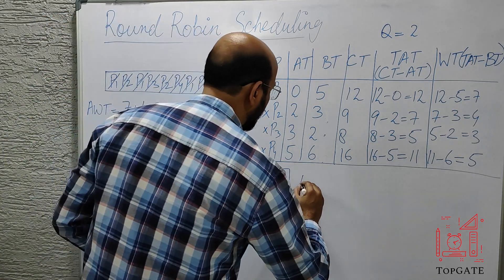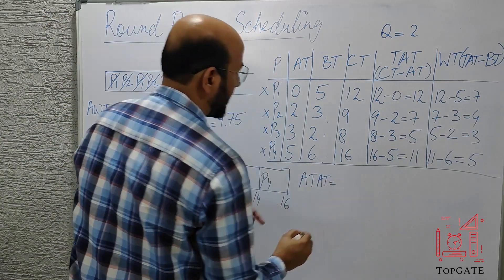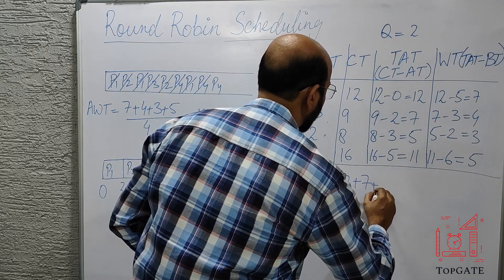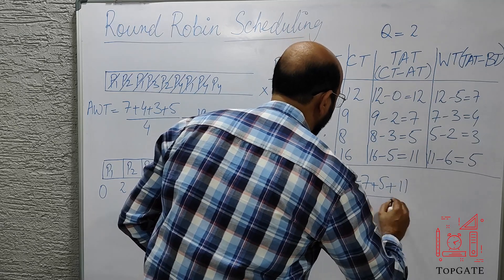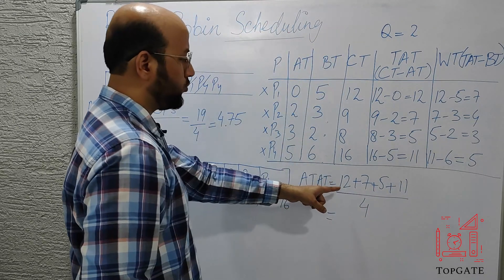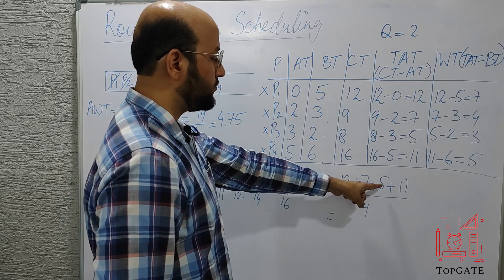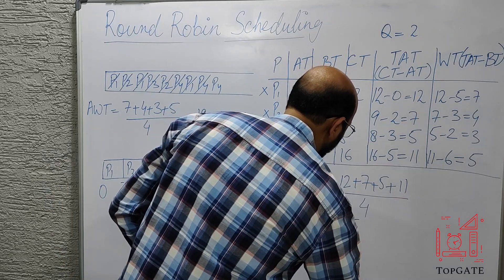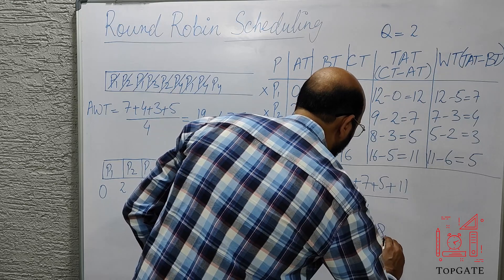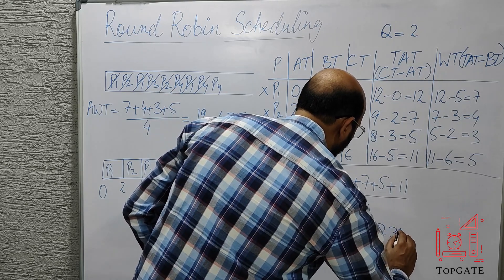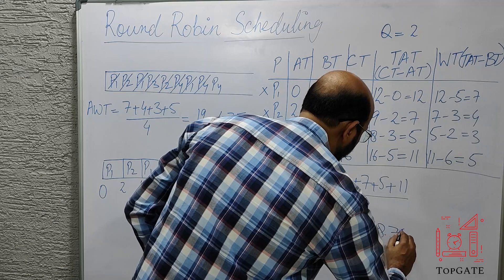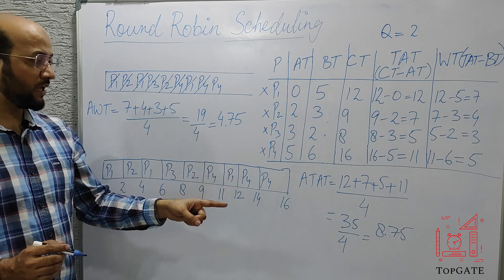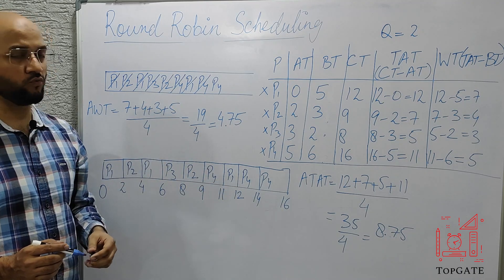Average turnaround time = (12 + 7 + 5 + 11) / 4 = 35 / 4 = 8.75. So the average turnaround time is 8.75 and the average waiting time is 4.75.